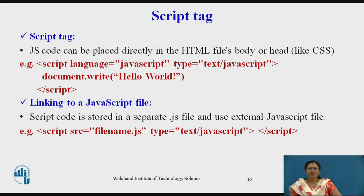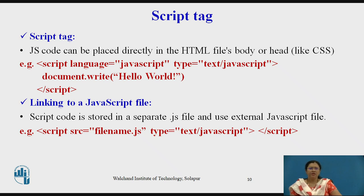Now we will see how the script tag works on an HTML page. The JS code can be placed directly in the HTML file's body or head tag, similar to CSS. For example: script tag with language equal to JavaScript and type equal to text/JavaScript, then we call document.write('Hello World'), and close with the end script tag.